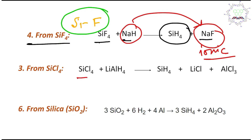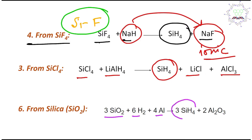Another method: silicon tetrachloride treated with lithium aluminium hydride produces silane and lithium chloride. Finally, the reaction of silica with hydrogen and aluminium metal also produces silane. All of these processes produce SiH₄ — silane — which is a gas. This gas comes out from the reaction mixture and can be stored, so in this way the reaction mixture is purified very easily.